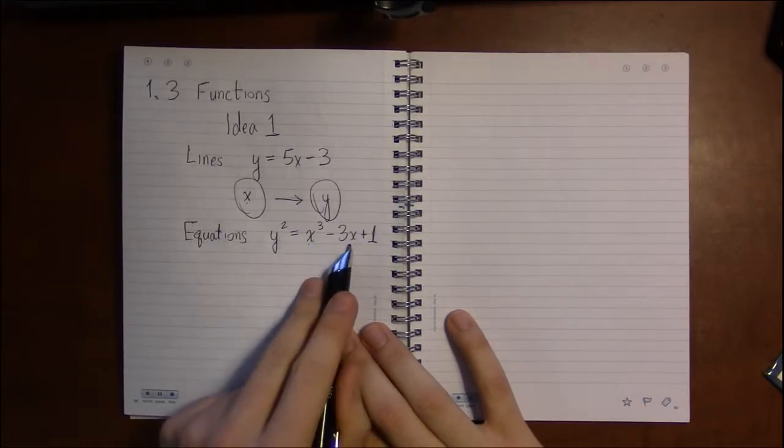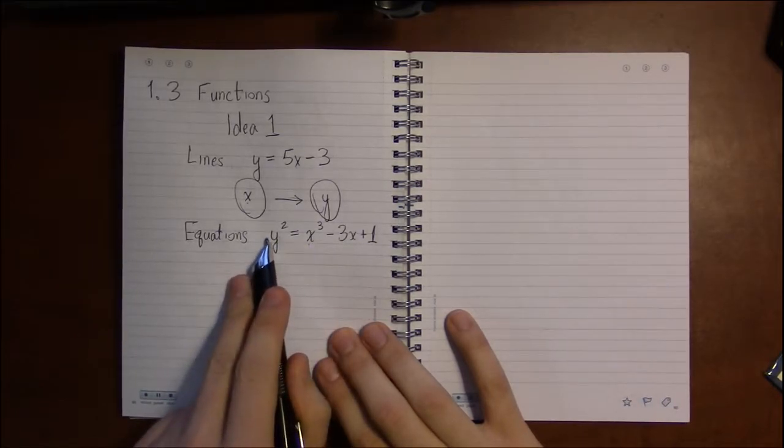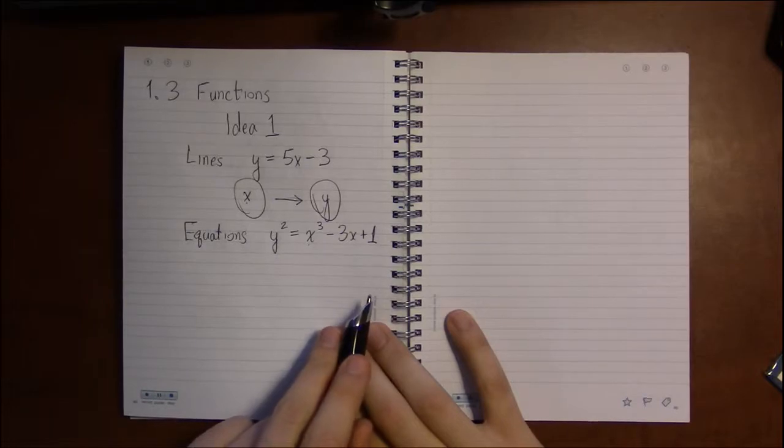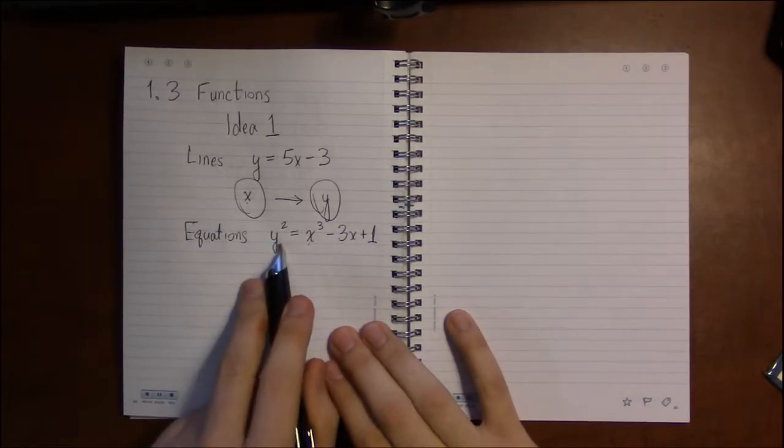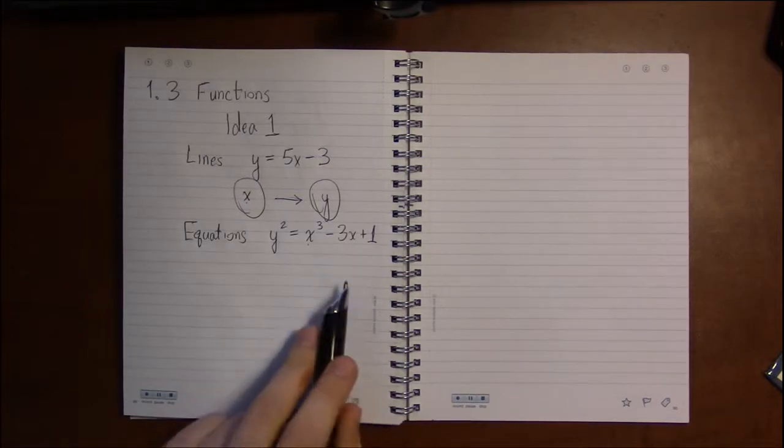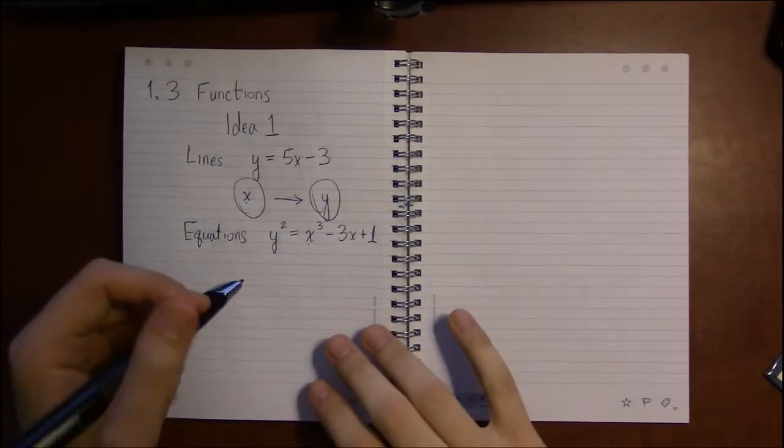Plug in a value of x and there's an associated value of y. The trouble is that there's more than one value associated to y for almost every value of x that you could plug in here.